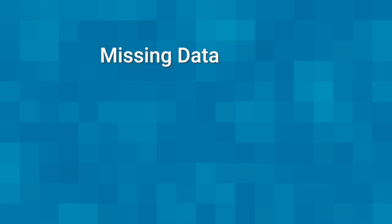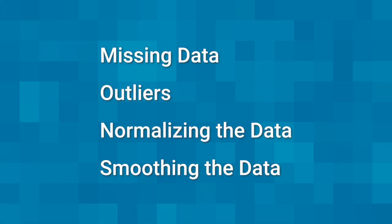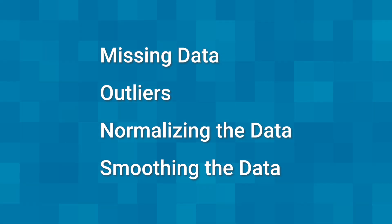Some major methods we're talking about today are missing data, outliers, normalizing the data, and smoothing the data. If you're not sure which method is relevant to your problem, don't worry. We'll go over when to use each method before getting to how to do it in MATLAB. For ease of viewing, this video is divided into chapters. Feel free to skip ahead if there's a particular topic you're interested in.